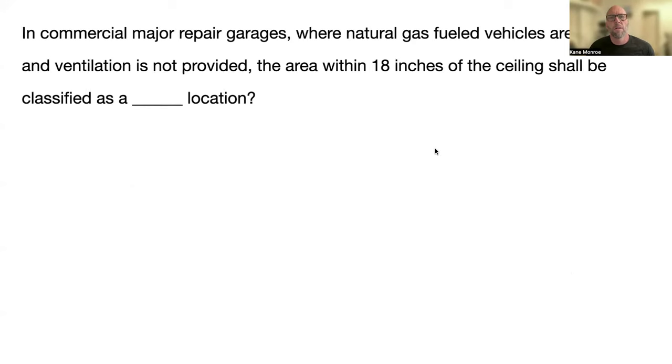In a commercial major repair garages where natural gas fueled vehicles are repaired and ventilation is not provided, the area within 18 inches of the ceiling shall be classified as a blank location. And that's a Class 1, Division 2 area, 515.3D and table 515.3D.